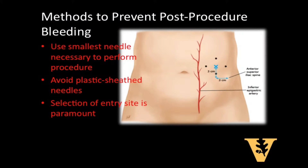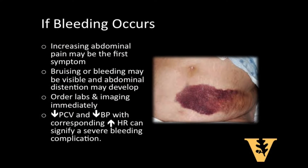Selecting the best needle entry site is important to avoid bleeding complications. In the midline and just lateral to the umbilicus, abdominal wall collateral vessels may be present, so those areas should be avoided. The anterior superior iliac spine should be located and a site chosen that is two finger breadths (about three centimeters) medial and two finger breadths (about three centimeters) cephalad to this anatomical landmark. Keep in mind that the epigastric artery can be three millimeters in diameter and under high blood pressure; if severed, it can bleed massively.